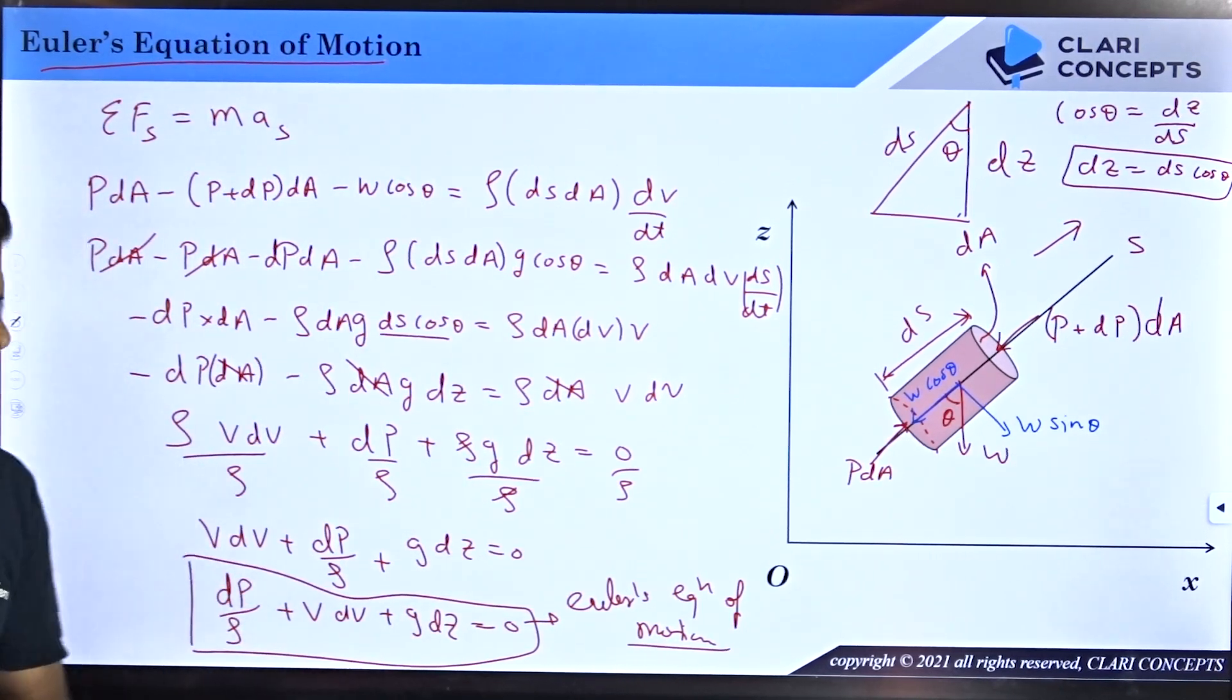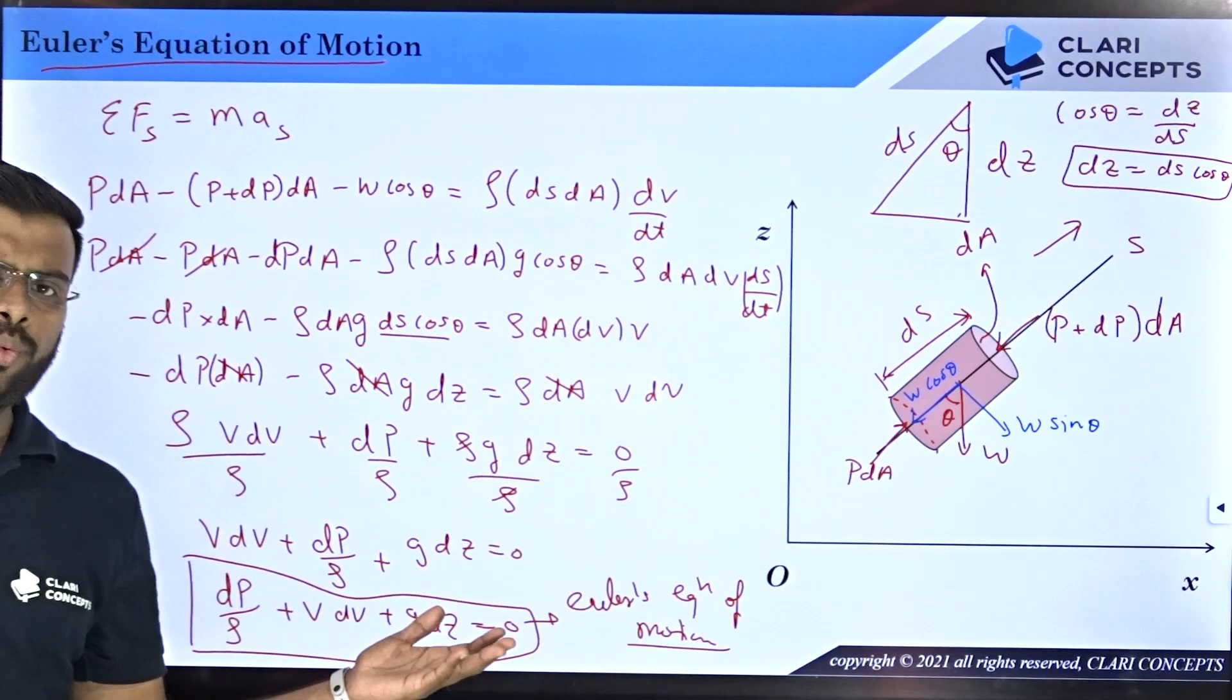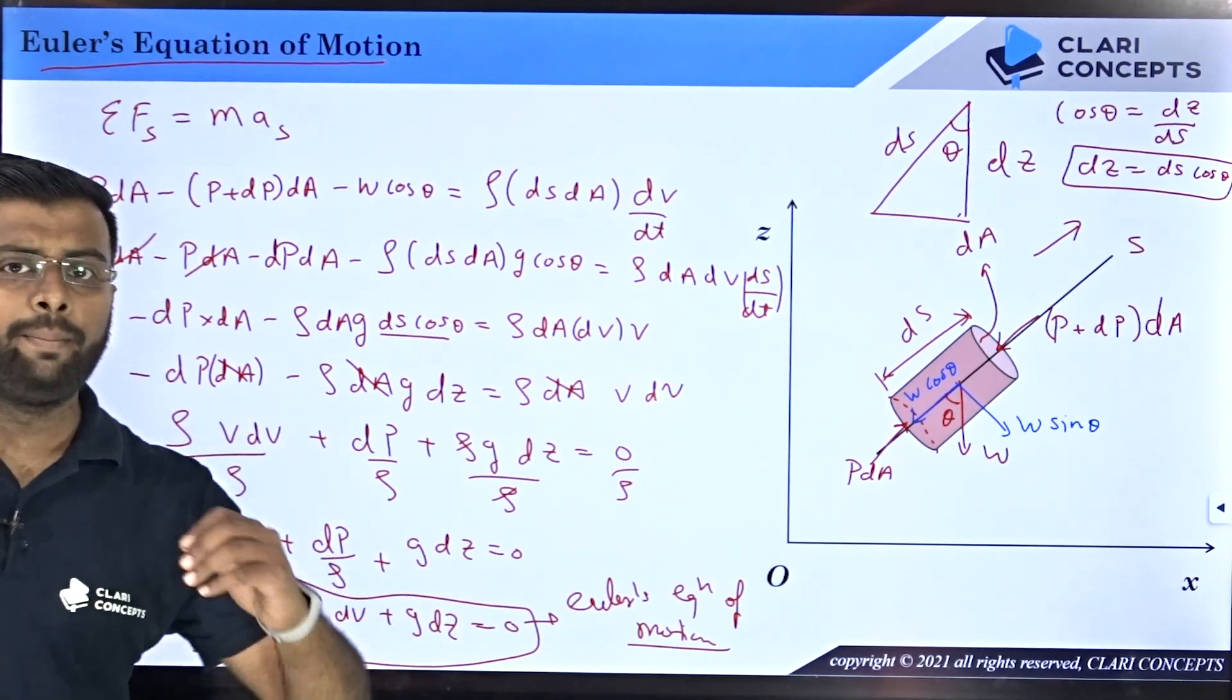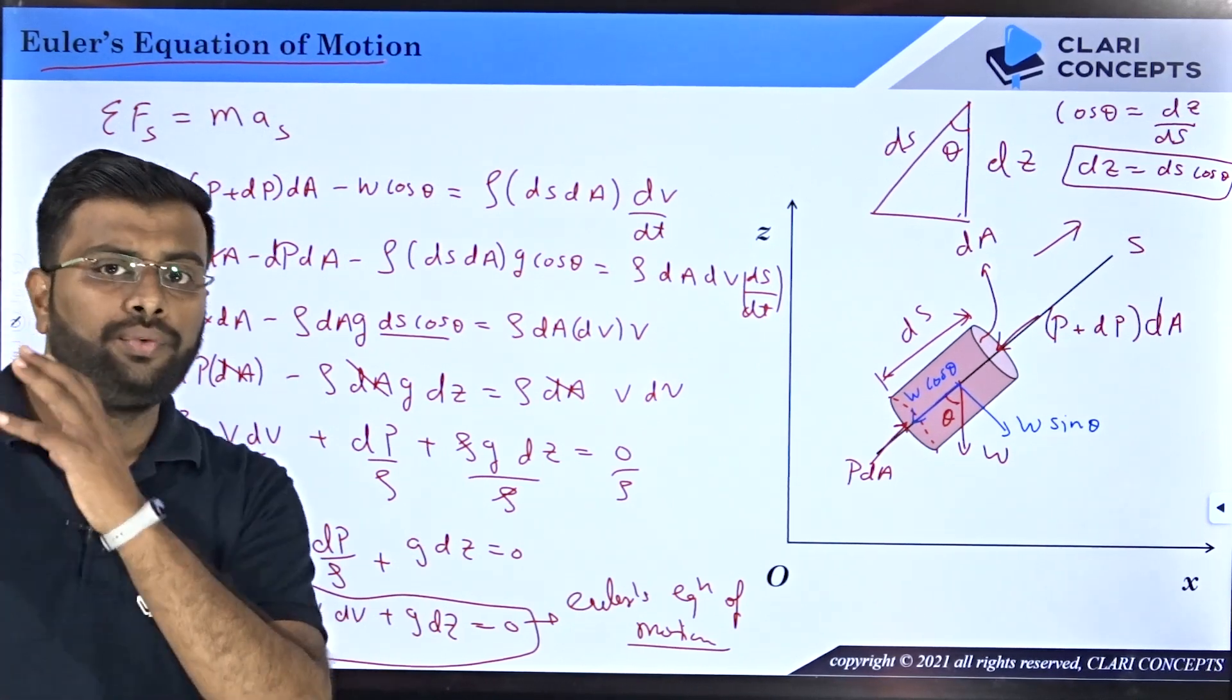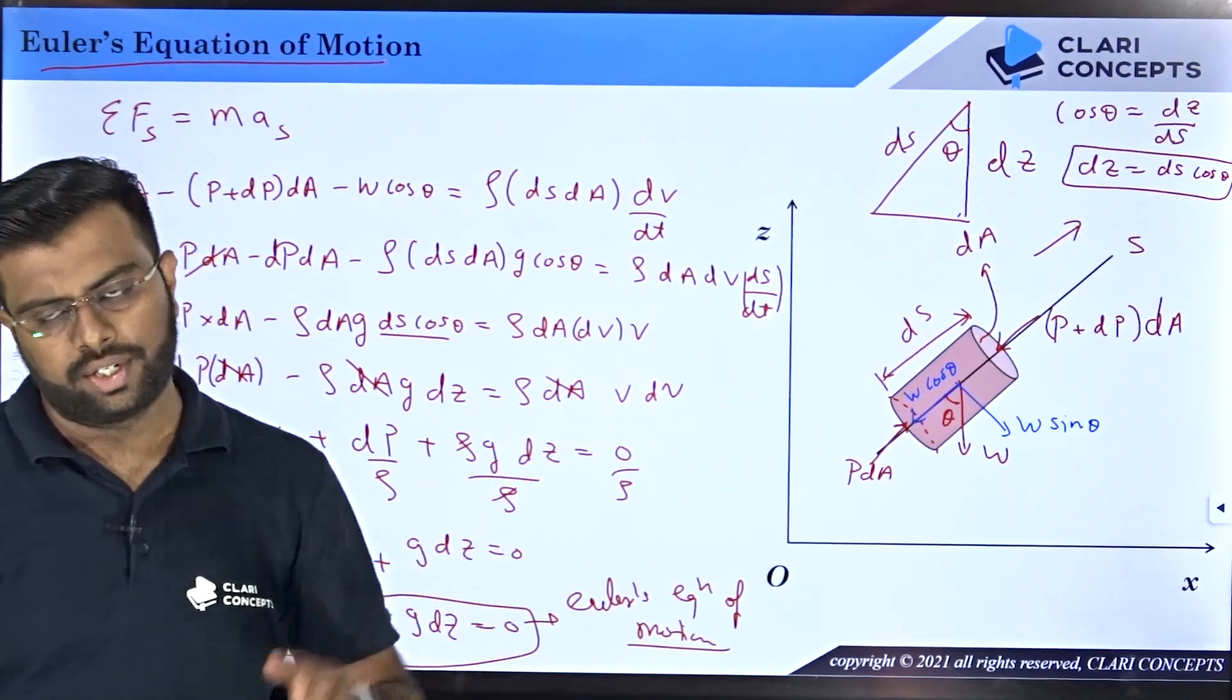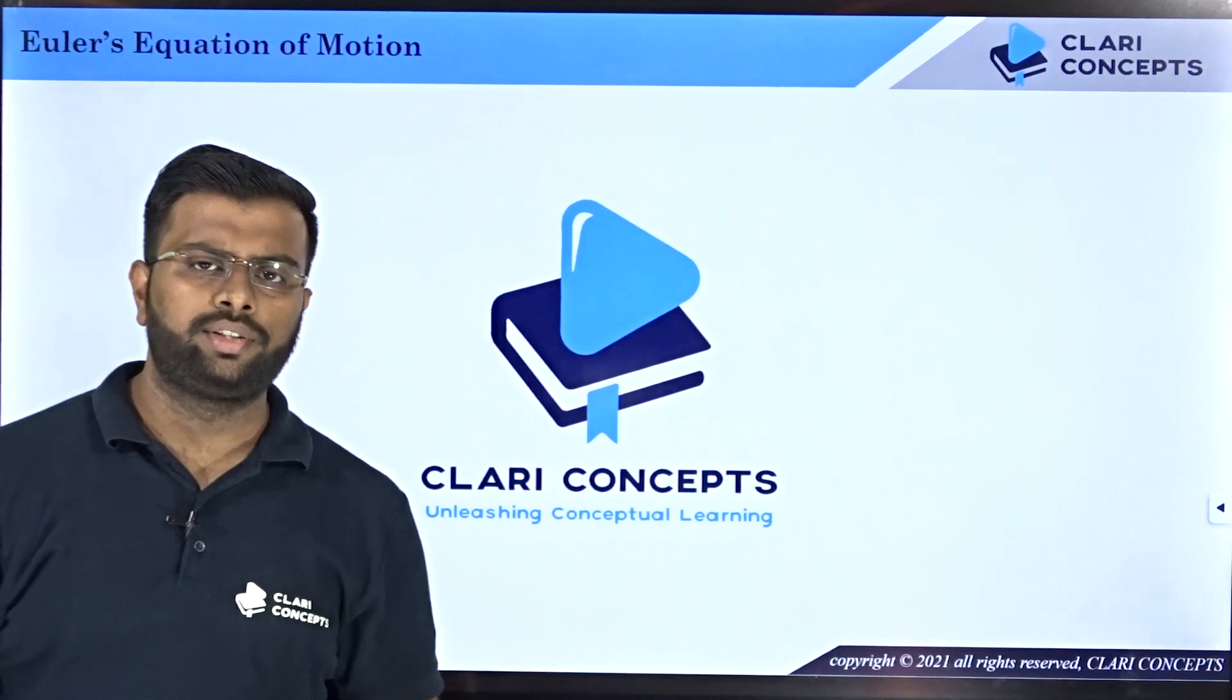So I hope you understood how to derive the Euler's equation of motion. We will use this equation to derive Bernoulli's theorem, and Bernoulli's equation will be used inherently to figure out the energy content of the fluid flowing through a pipe at different sections. Thank you so much. See you in the next class.